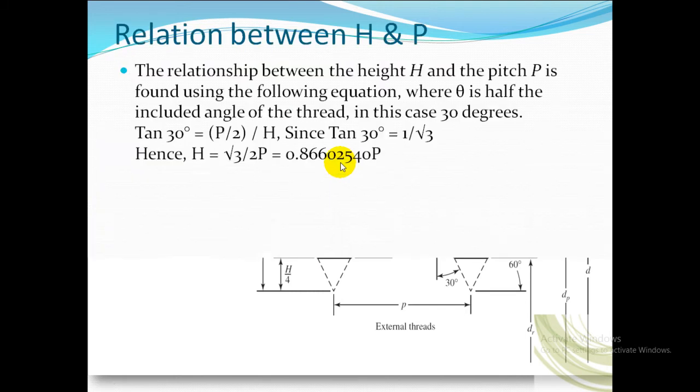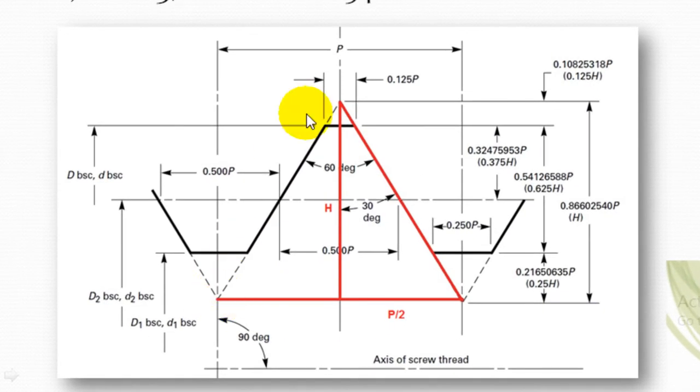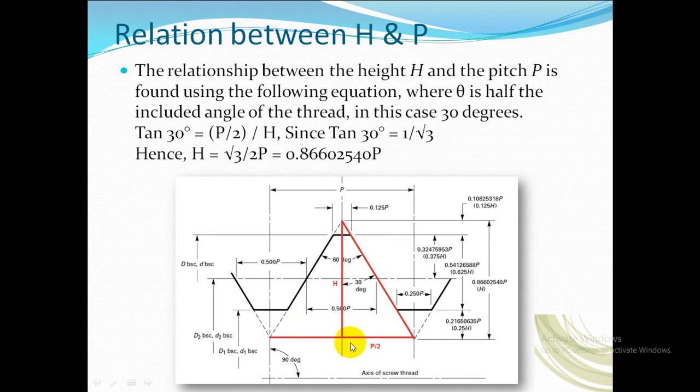Let us see the relation between H and P. From the figure it is seen that the equilateral triangle is split into two right-angled triangles where H is the height and P by 2 is the base of right-angled triangle. Using trigonometric function, tan 30 equals opposite by adjacent equals P by 2 divided by H. Also tan 30 equals 1 divided by root 3. Solving for H, we get H equals root 3 by 2 times P, which equals 0.86602540 times P. People may ask why so many digits after the decimal point. As per screw thread standards, minimum eight digits should be presented after the decimal point for the accuracy of the manufacturing process and also for the calculation purpose.